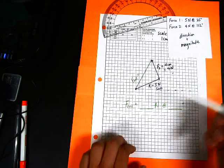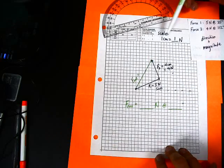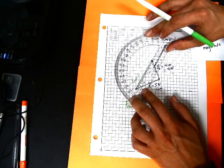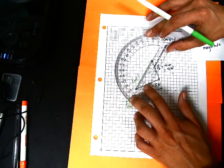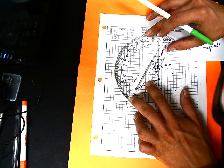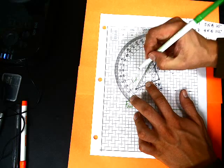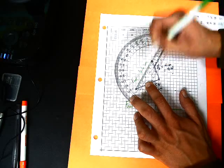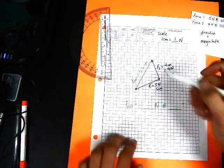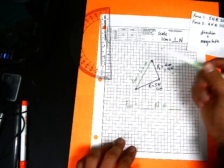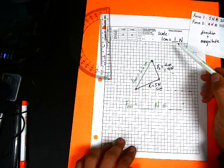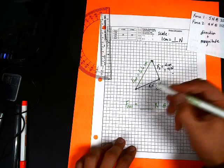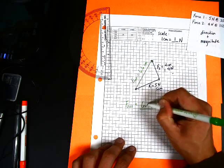So how do we determine the magnitude? Well, we set up our scale so that one centimeter is one newton. So if we just measure this, we see, all right, well this is, let's see, 6.6 centimeters long. So 6.6 centimeters. And our scale, each centimeter is one newton. So 6.6 times one is just 6.6. So our net force is 6.6 newtons.